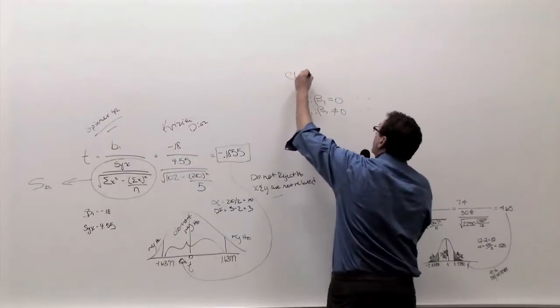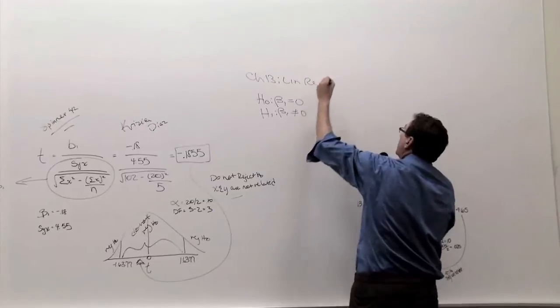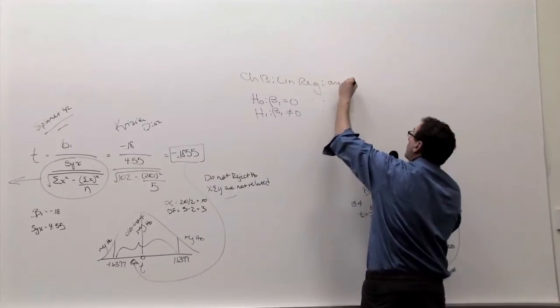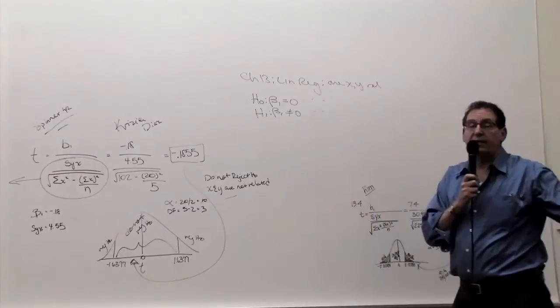This is Chapter 13, which is called Linear Regression, and in particular, it's the part of the chapter that talks about are x and y related? And when I mean related, I really mean linearly related, that they follow a straight line.